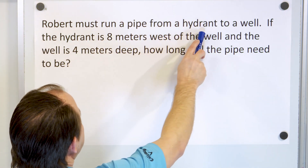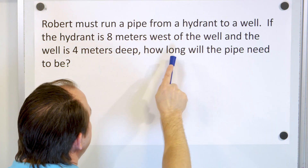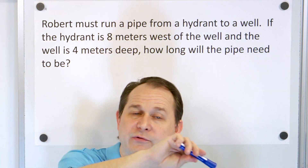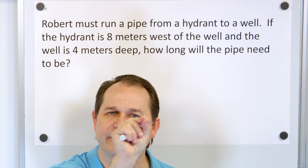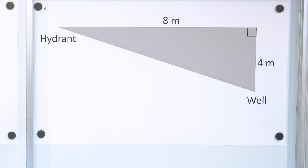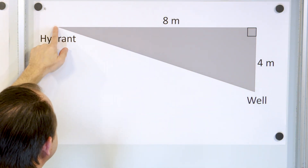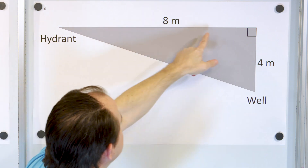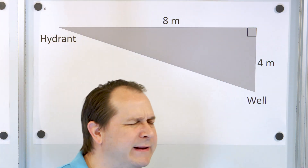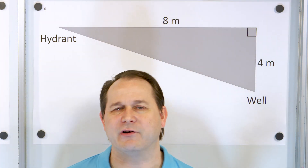Our next problem: Robert must run a pipe from a hydrant to a well. The hydrant is 8 meters west of the well, and the well is 4 meters deep. How long will the pipe need to be? It's kind of an upside-down triangle — we're laying a pipe underground at an angle. We know how far away the hydrant is from the well and how deep the well is. It would be wasteful to just guess; we need to calculate.